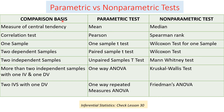Now let's look at the list of parametric tests and their non-parametric counterparts. The measure of central tendency uses the mean in parametric tests, whereas the median is used in non-parametric tests. For correlation, Pearson correlation is used in parametric tests, while Spearman rank correlation is used in non-parametric tests.